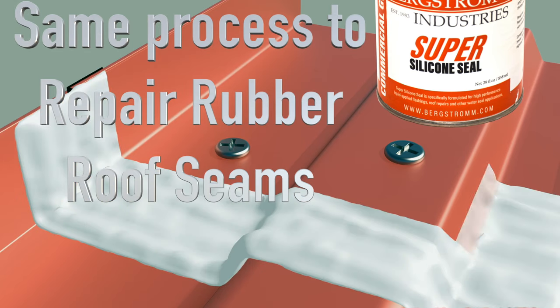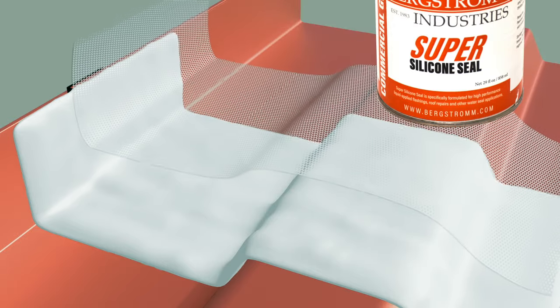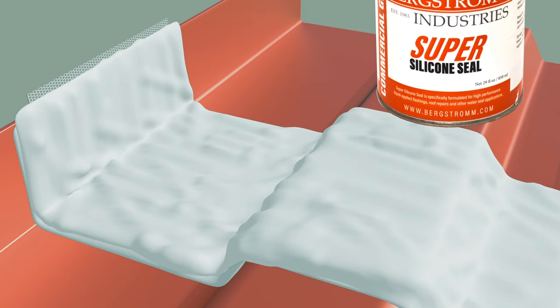After that, you take super silicon seal and cover the seam two inches on each side with super silicon seal, a mesh, and super silicon seal again.